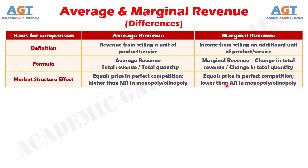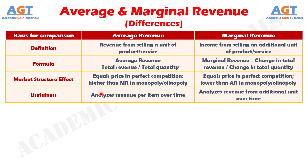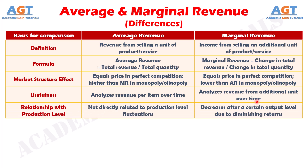Number four: average revenue helps a firm analyze whether the earnings from producing a unit are decreasing or increasing over a period of time, whereas marginal revenue helps a firm analyze whether the earnings from producing an additional unit are increasing or decreasing over a period of time. Number five: average revenue is not directly related to production level fluctuations. On the other hand, marginal revenue decreases after a certain output level due to the law of diminishing returns.